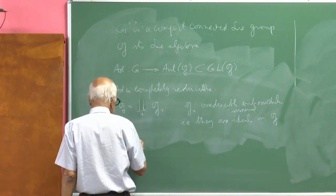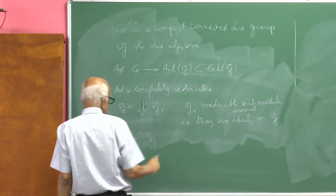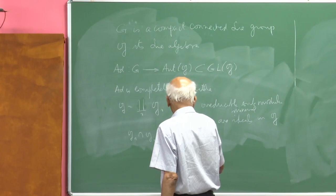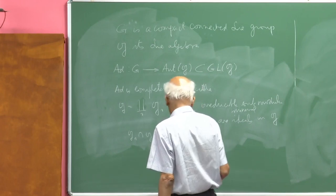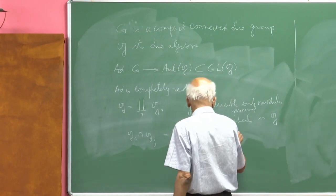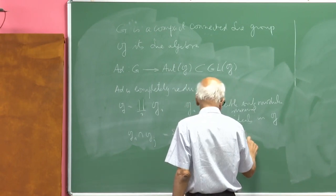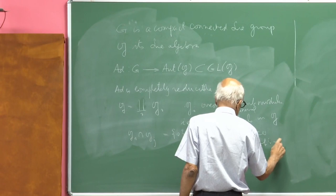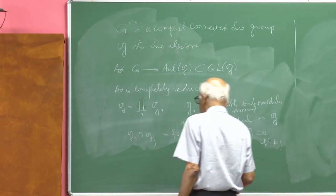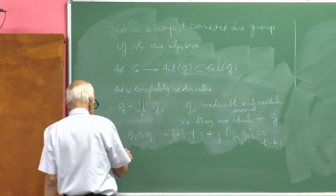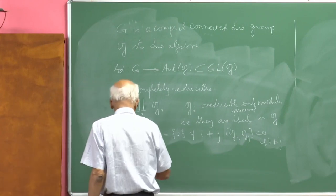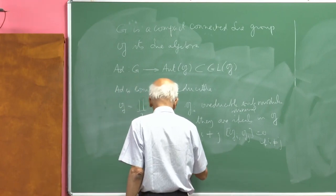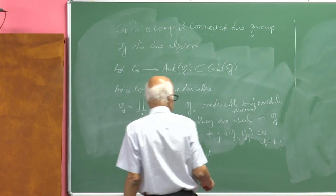This means these are ideals — irreducible sub-modules of the adjoint representation are minimal ideals in G. Also G_i ∩ G_j equals 0 if i ≠ j, which implies [G_i, G_j] = 0 if i ≠ j. This means G is a direct product of these minimal ideals.